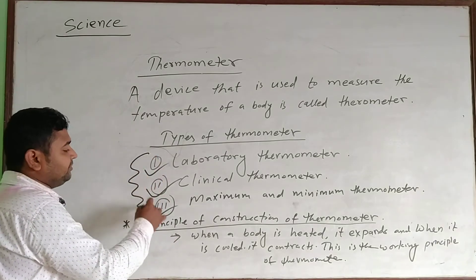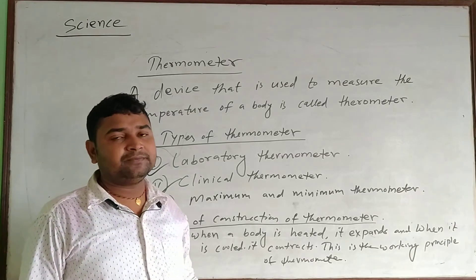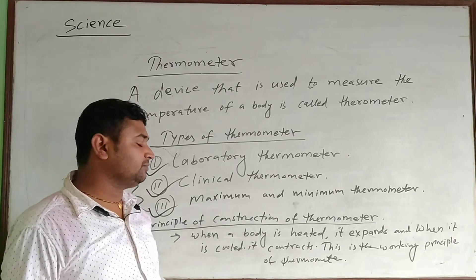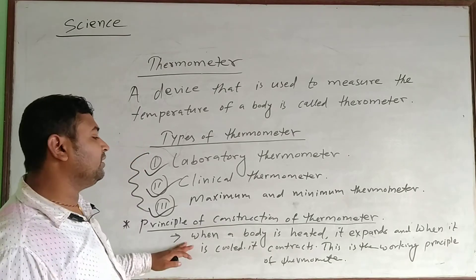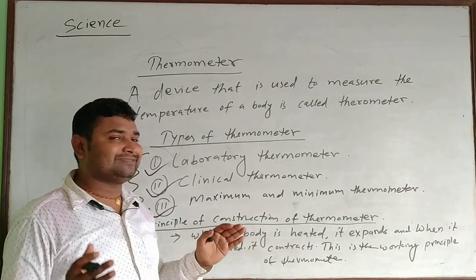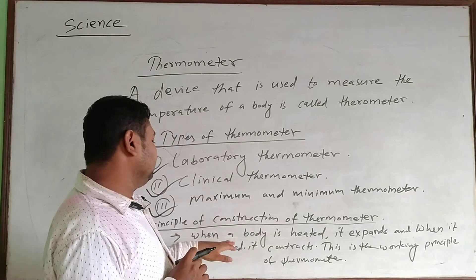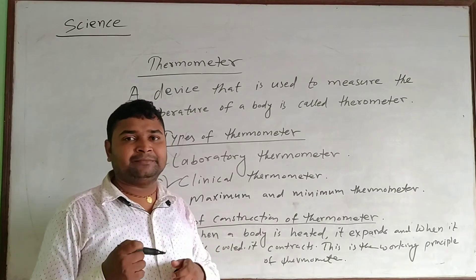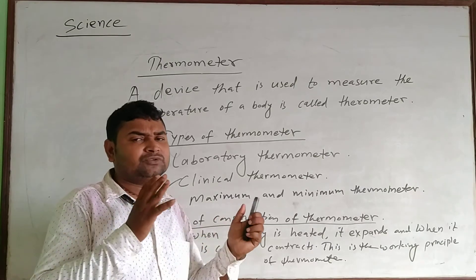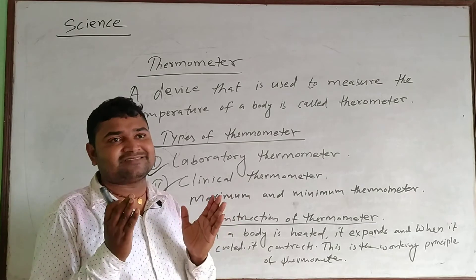Now, the principle of construction of the thermometer states that when a body is heated it expands, and when it is cooled it contracts. So there is expansion when the body is heated, and contraction when the body is cooled.